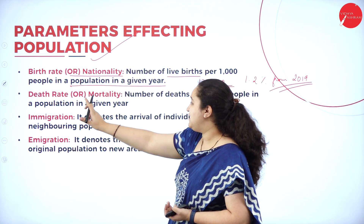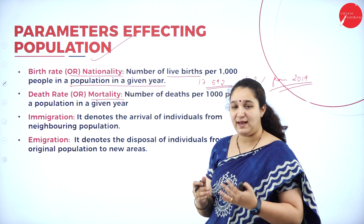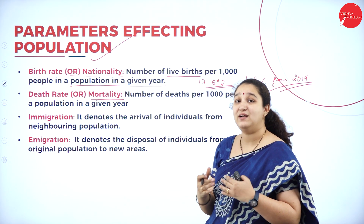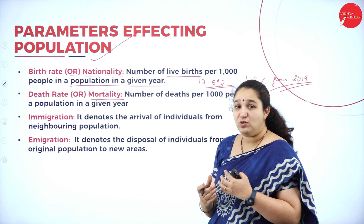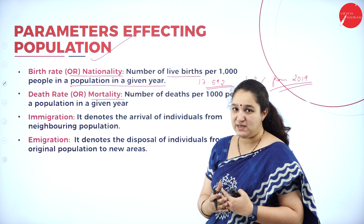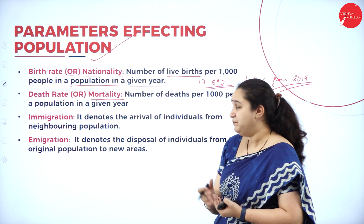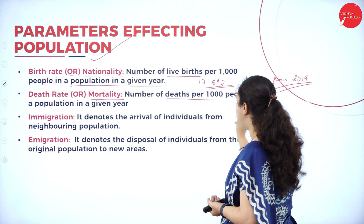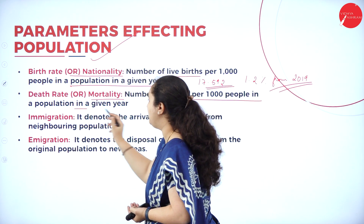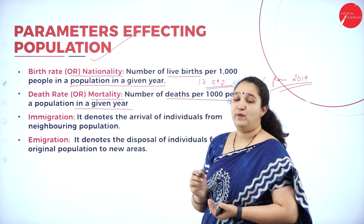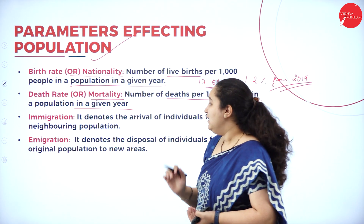Next is death rate, or mortality. Death rate refers to the speed at which deaths are taking place. The number of deaths per thousand people in a population in a given year is called the death rate.